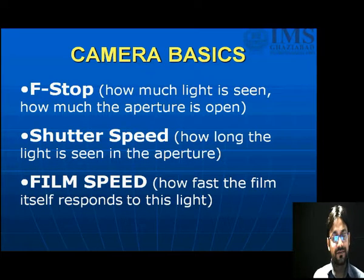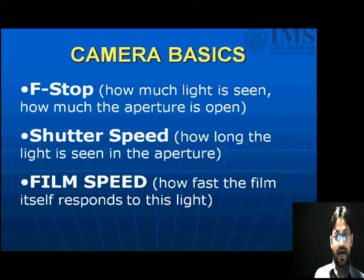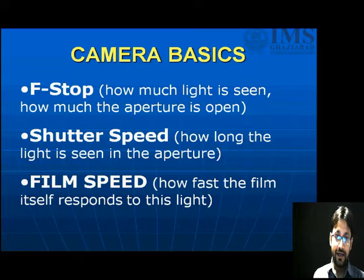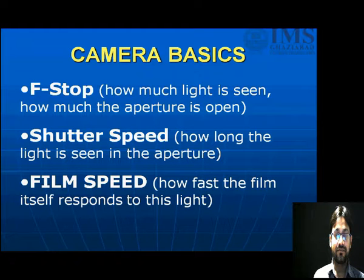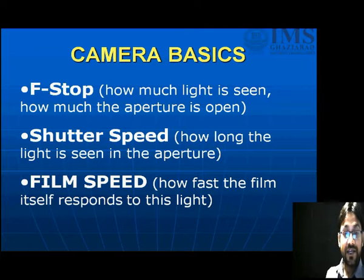F-stop — what is f-stop? F-stop is a value which defines how much the aperture is open and how much light is seen on the sensor. Shutter speed basically controls the time period of light — that means how long the light is seen in the aperture. Film speed: how fast the film itself responds to this light.